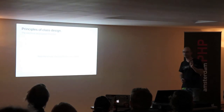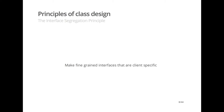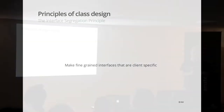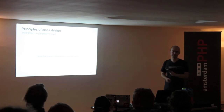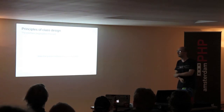The I of SOLID is the Interface Segregation Principle: make fine-grained interfaces that are client specific. This means your interfaces should not have too many methods, and more specifically, too many methods related to different things. You have to try to keep your interfaces clean and make sure the methods are about the same thing. This principle is also applicable to package design, as we will see later.